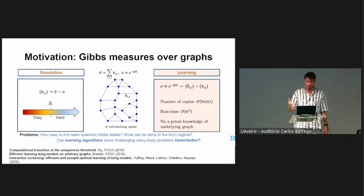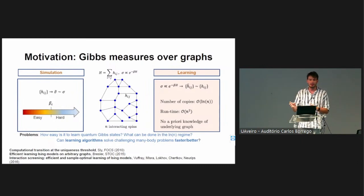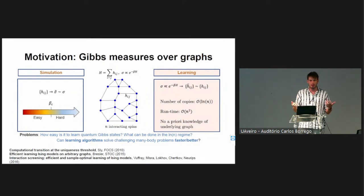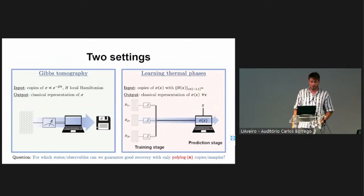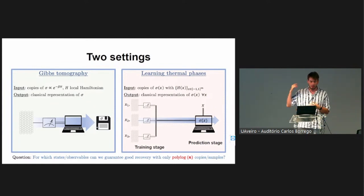In this talk I will mostly be interested in what can be done if we are given log n samples. If you have n qubits, I want to see what properties of these Gibbs states we can estimate in the setting where the number of samples scales logarithmically in system size. We'll consider two different settings: the traditional tomography setting where you're given multiple copies of the same state and want to infer some classical representation of it.